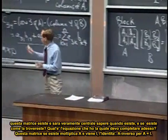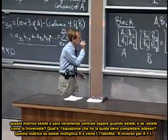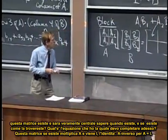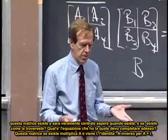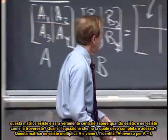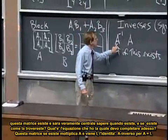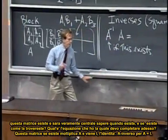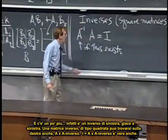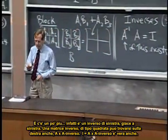And then if it does exist, how would you find it? But what's the equation here that I have to finish now? This matrix, if it exists, multiplies A and produces I, the identity.